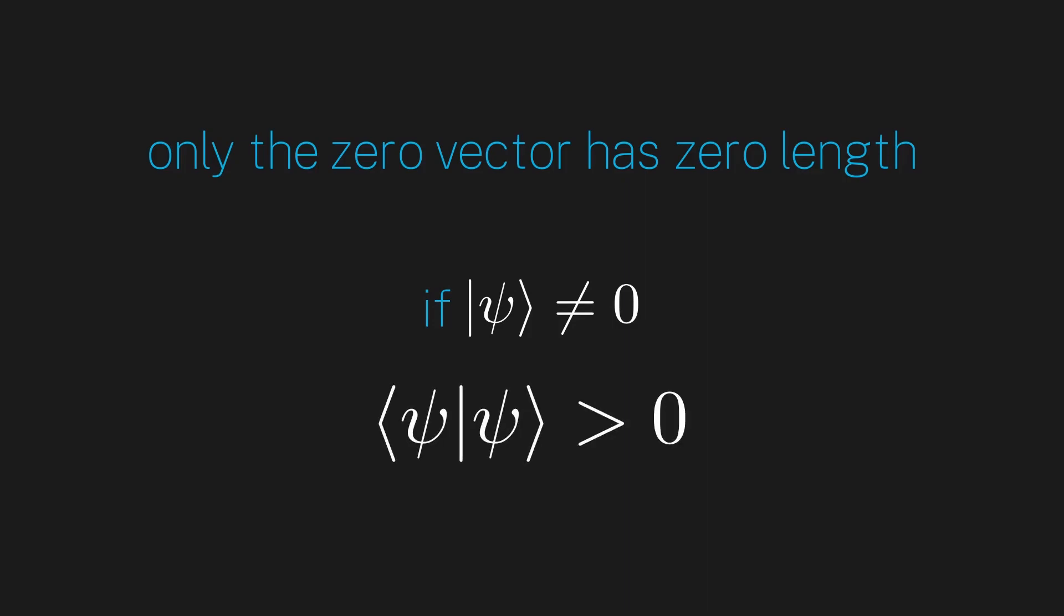Last, we need one more condition to ensure that the magnitude of vectors makes sense. We must impose the fact that only the 0 vector has 0 length, meaning if your vector is non-zero, then its length must be greater than 0. Common sense, right? And that's it. We now have the formal definition of the inner product.